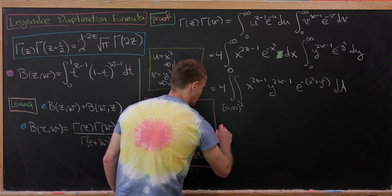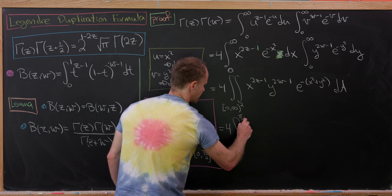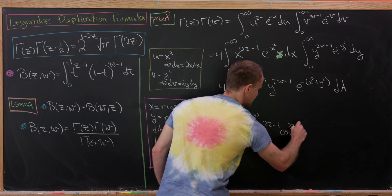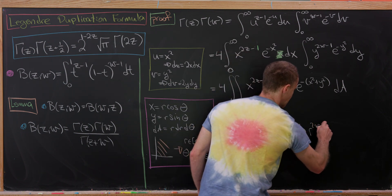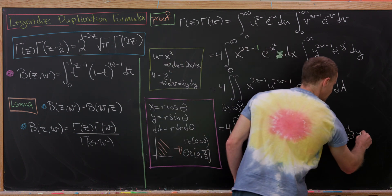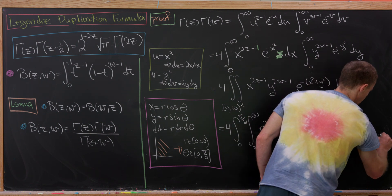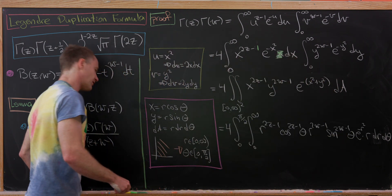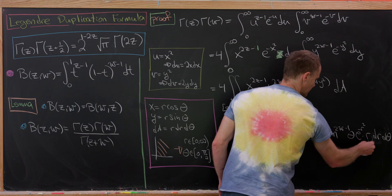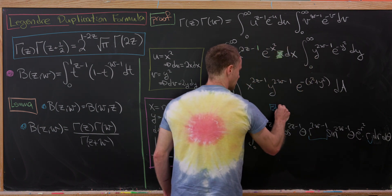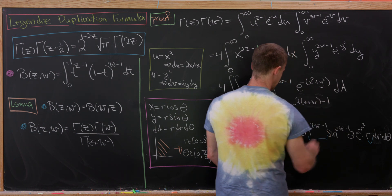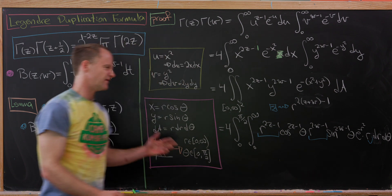Rewriting in polar coordinates, we have 4 times the integral from 0 to π/2 times the integral from 0 to infinity. We get r^(2z-1) cos^(2z-1)θ times r^(2w-1) sin^(2w-1)θ times e^(-r²) times r dr dθ. Collecting all the r terms, the exponent on r becomes 2(z+w) - 1.